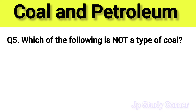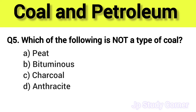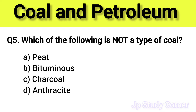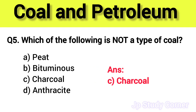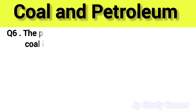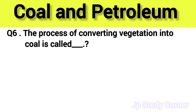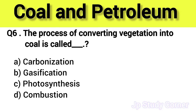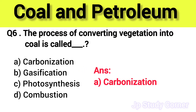Question number five: which of the following is not a type of coal? The right answer is option C — charcoal. Question number six: the process of converting vegetation into coal is called a dash. The right answer is option A — carbonization.